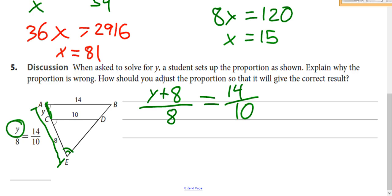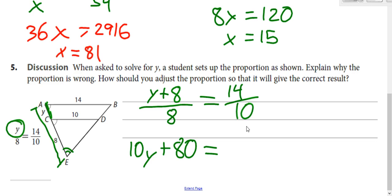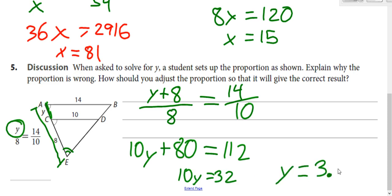You have to use the entire length of one triangle over the entire length of the other. Cross multiplying: 10 times (Y plus 8), distributing gives 10Y plus 80 equals 8 times 14, which is 112. Subtract 80, then divide by 10 to get Y equals 3.2.